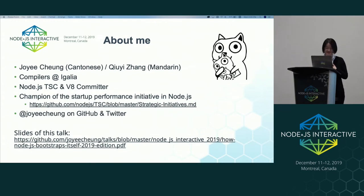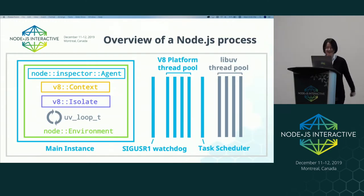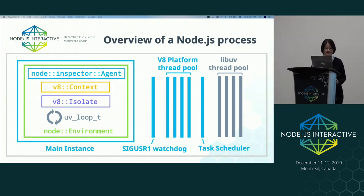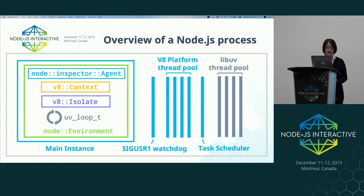Let's talk about Node. This is the process model of Node and also the goal of the bootstrap process. In a Node process, you usually have one main Node instance running on the main thread, which includes an inspector agent, a V8 context, a V8 isolate, a LibUV event loop, and a Node environment.